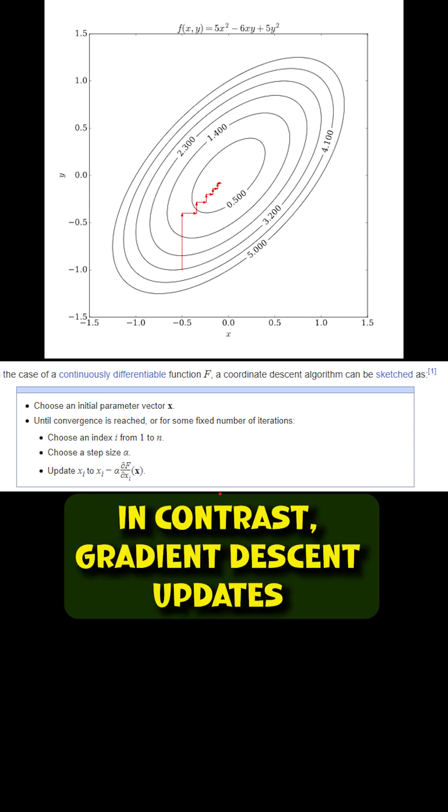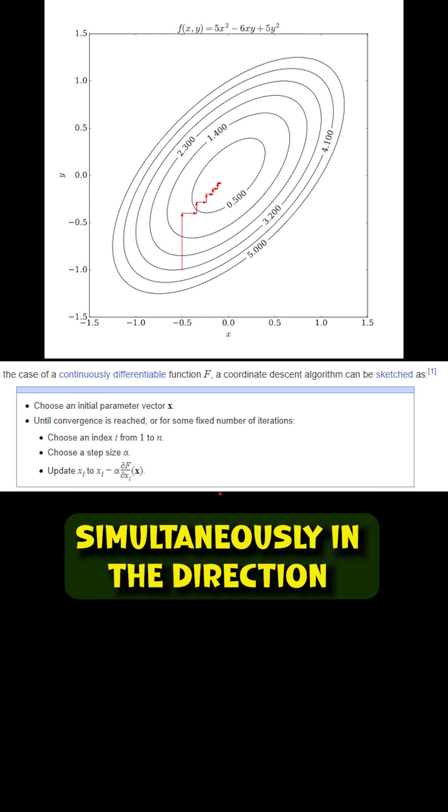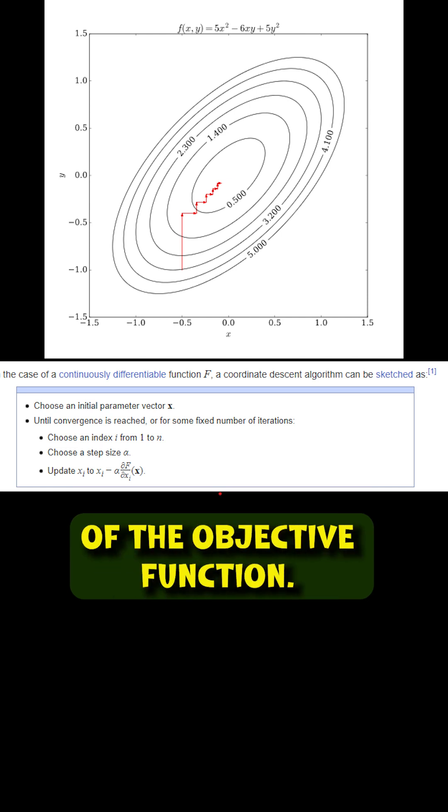In contrast, gradient descent updates all parameter values simultaneously in the direction of the negative gradient of the objective function.